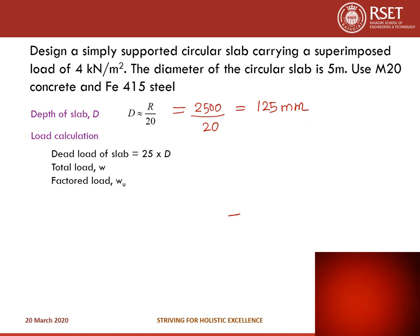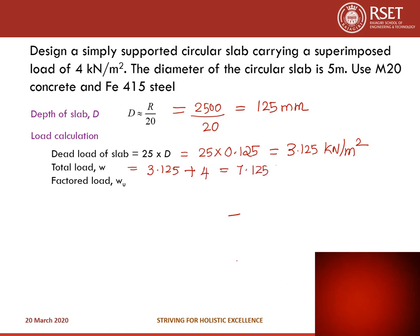Next, calculate the load on the slab. Dead load = 25 × d = 25 × 0.125 = 3.125 kN/m². Total load w = dead load + live load = 3.125 + 4 = 7.125 kN/m². Factored load = 1.5 × 7.125 = 10.7 kN/m².